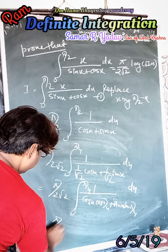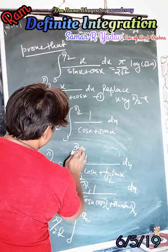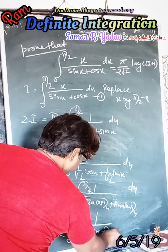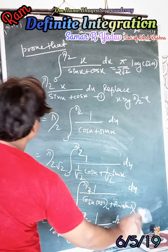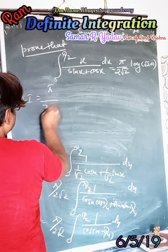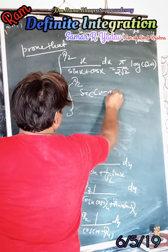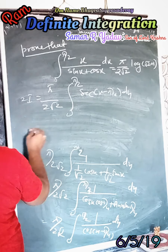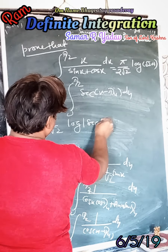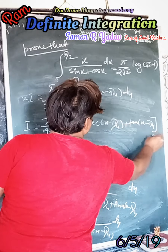Now using the cosine addition formula, we can write the integrand as 1/cos(x minus π/4). So 2I equals π/(2√2) times the integral from 0 to π/2 of sec(x minus π/4) dx. This 2 divides over, giving I equals π/(4√2) times log|sec(x minus π/4) + tan(x minus π/4)| evaluated from 0 to π/2.